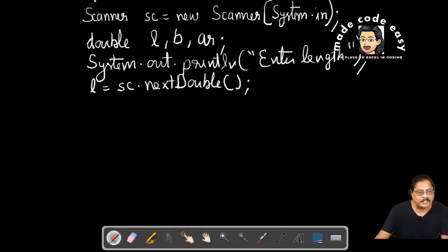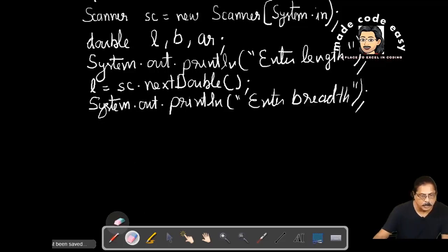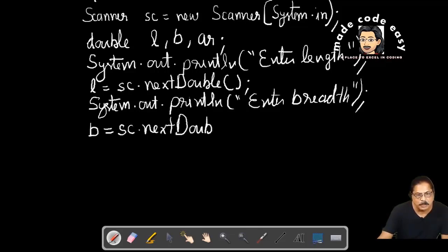We will take breadth input. We write System.out.println enter breadth. We write b equals sc.nextDouble(). Why we written nextDouble? Because our data type is double, that's why we written nextDouble.